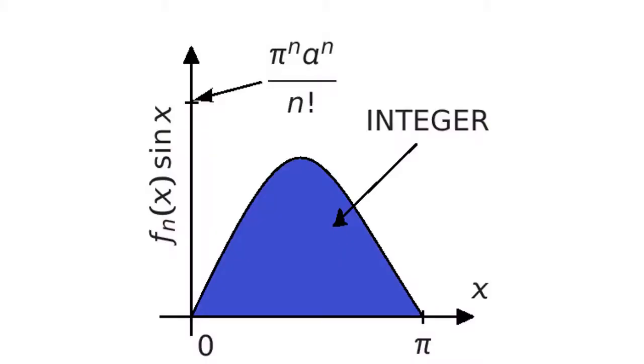This summarizes what we've concluded so far: the area under this curve has an integer value. But here's the rub — we can crank n as high as we like, which makes pi to the n times a to the n over n factorial arbitrarily small. That means the area becomes arbitrarily small — less than one. And we don't have any integers between zero and one, so we hit a brick wall. The issue is that we were assuming a and b exist. We resolve the contradiction by rejecting our original assumption that pi is the ratio of two positive integers a and b. Therefore, pi is irrational.